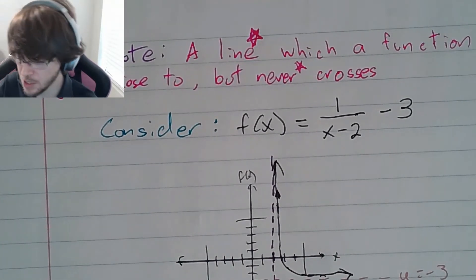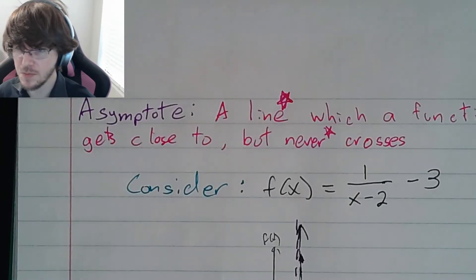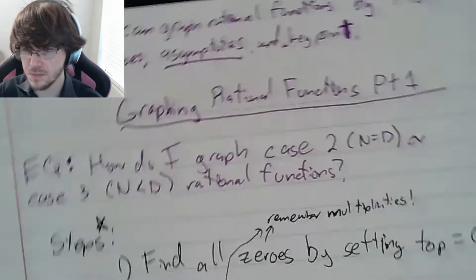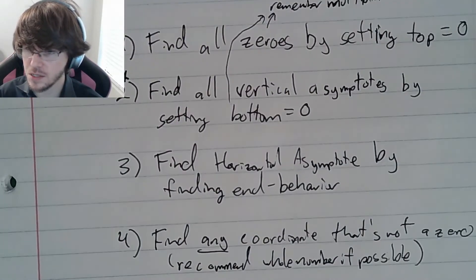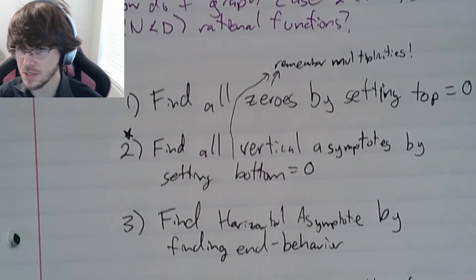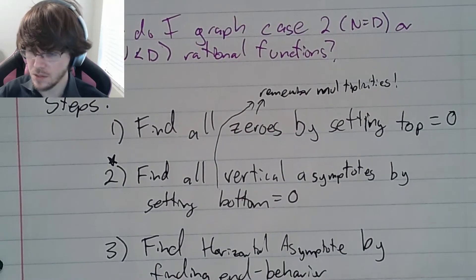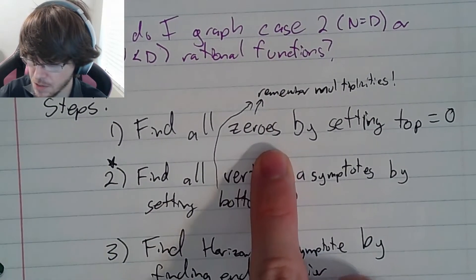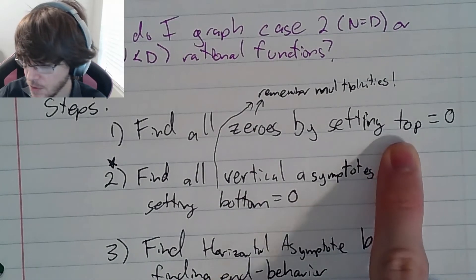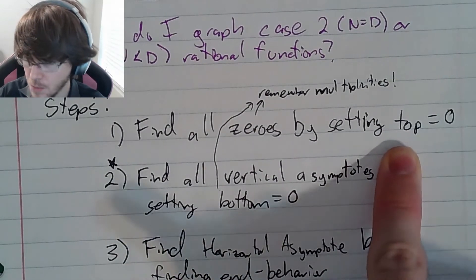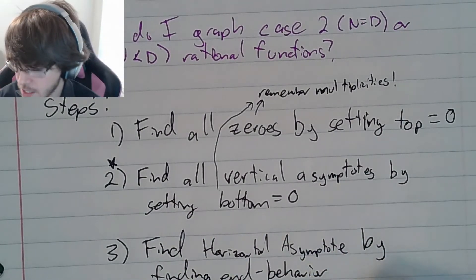We're going to have to deal with these asymptotes a whole bunch. We're going to learn how to graph these ourselves today — that's our goal. The graphing process is a five-step process. Step one: find all the zeros, remembering your multiplicities from our previous lesson, by setting the top — the numerator — equal to zero.